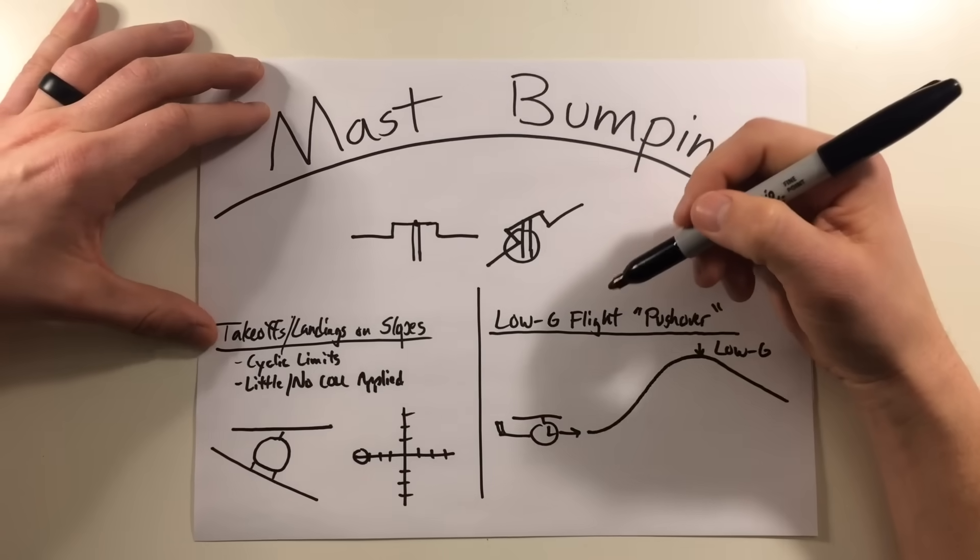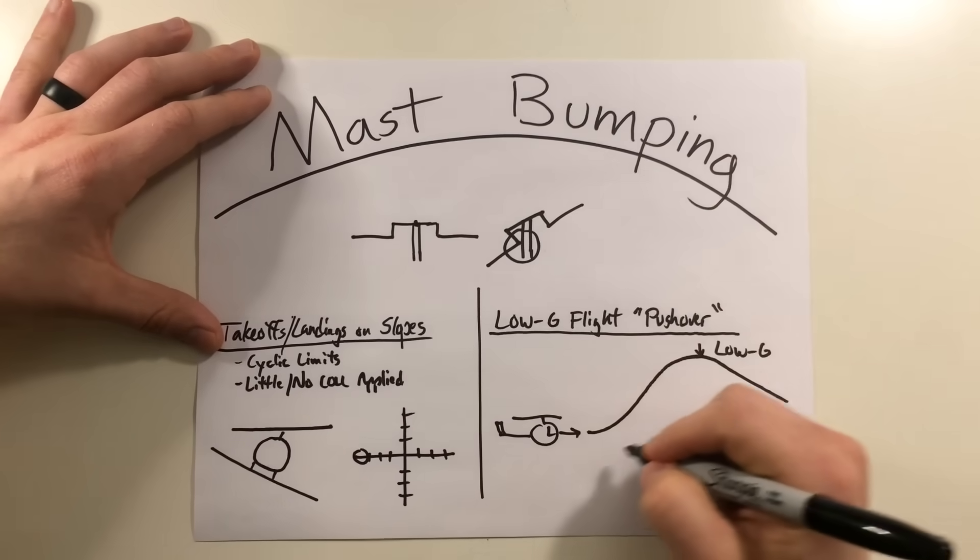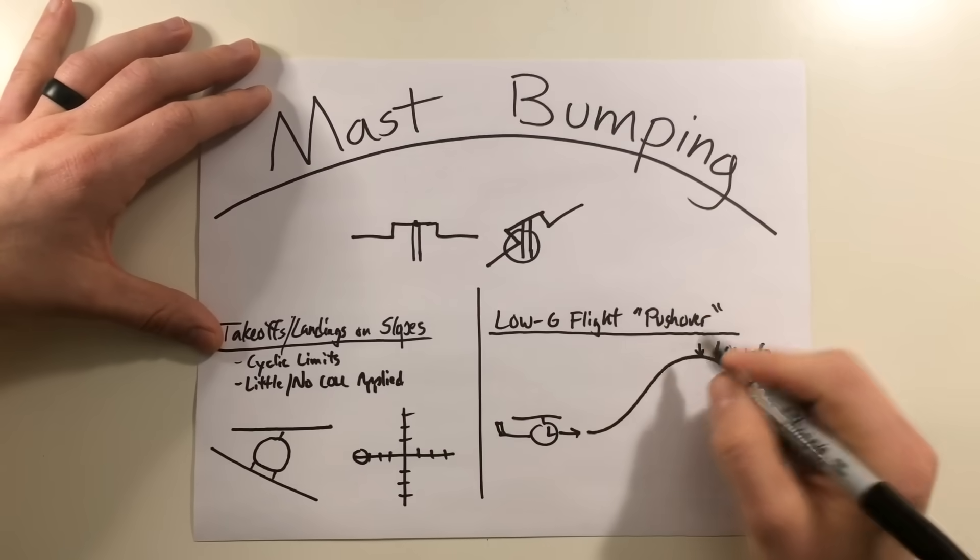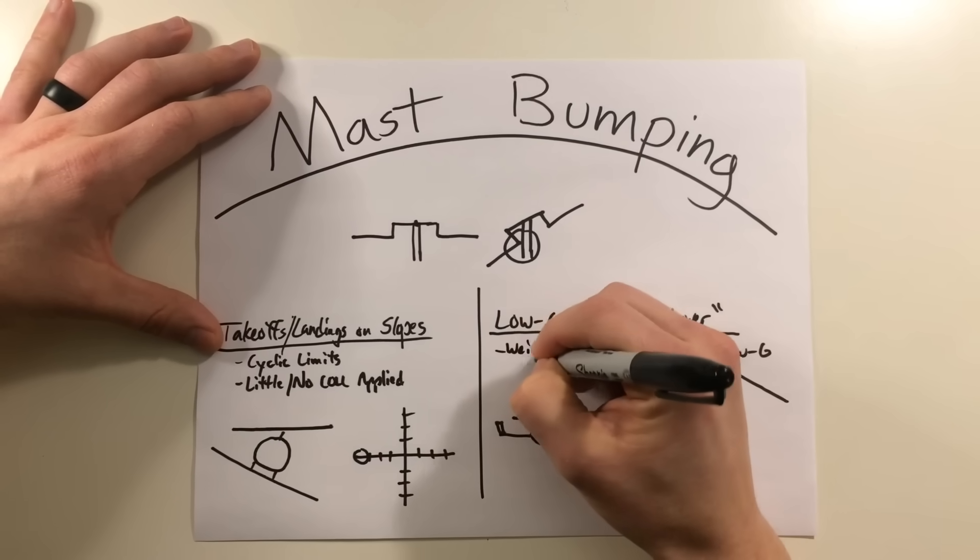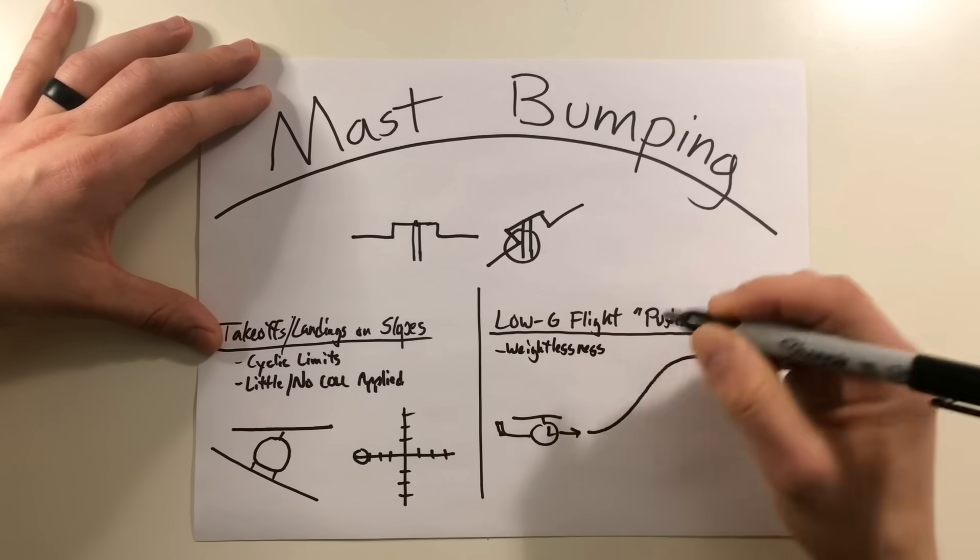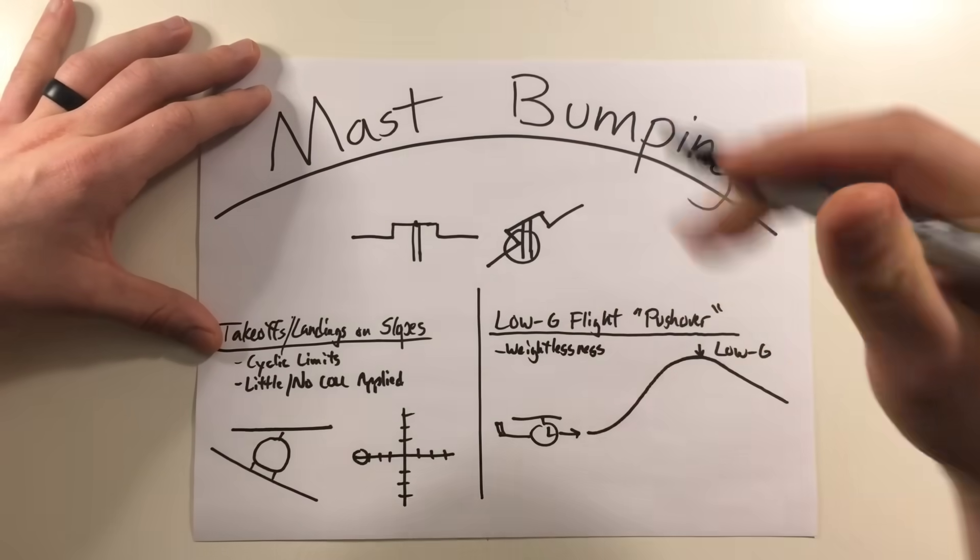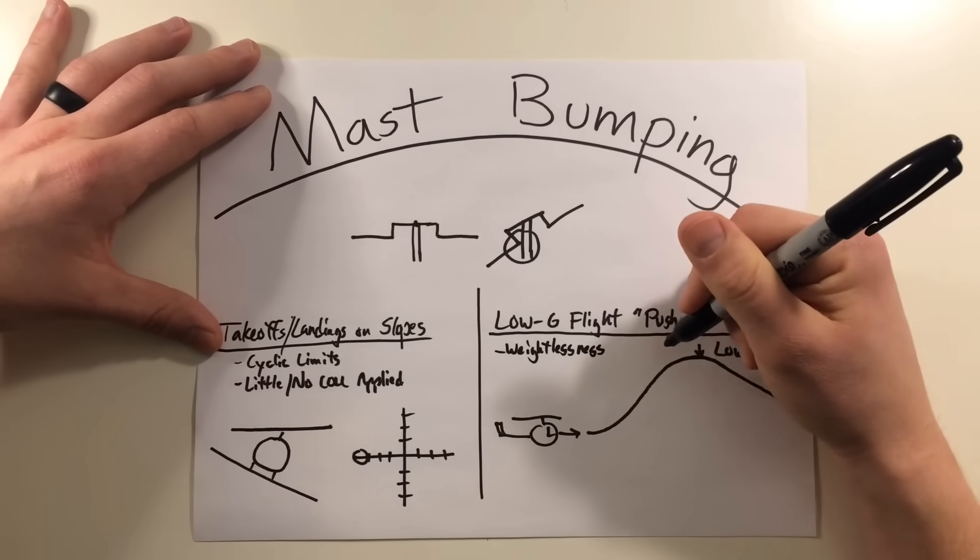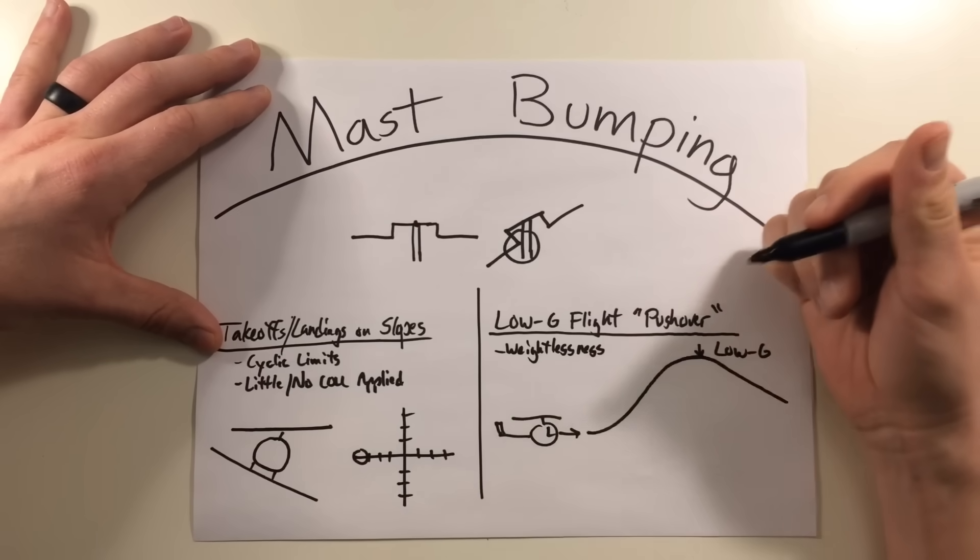So how does that happen? Well, as the helicopter reaches the crest, you're going to get into a type of weightlessness as you near the zero G point of your perch. The main rotor thrust at this point is going to be drastically reduced as it unloads.